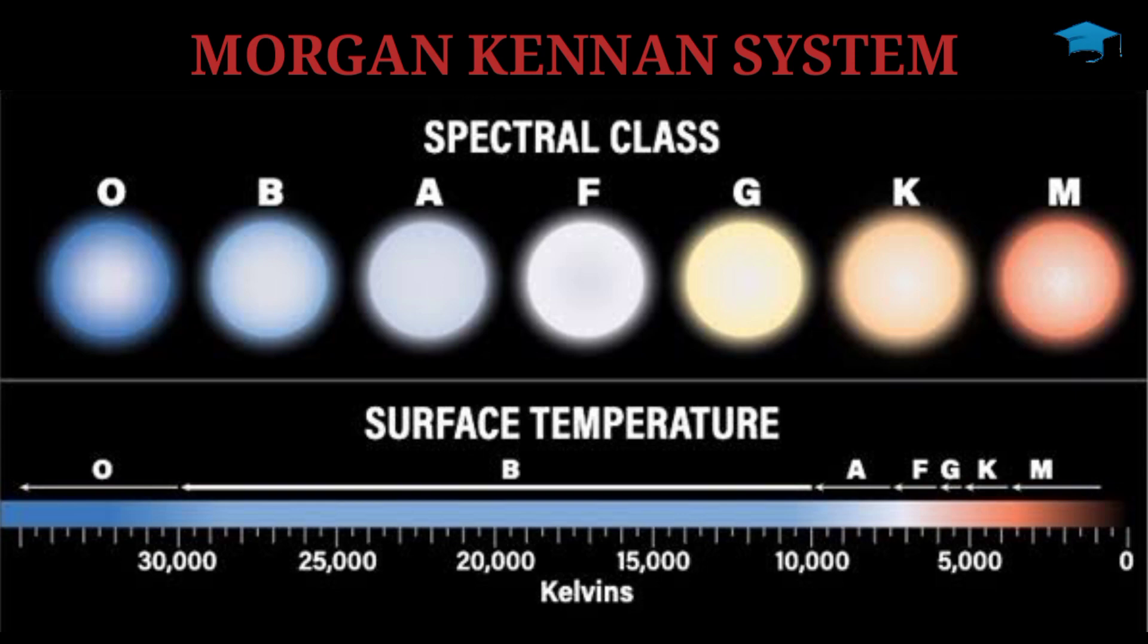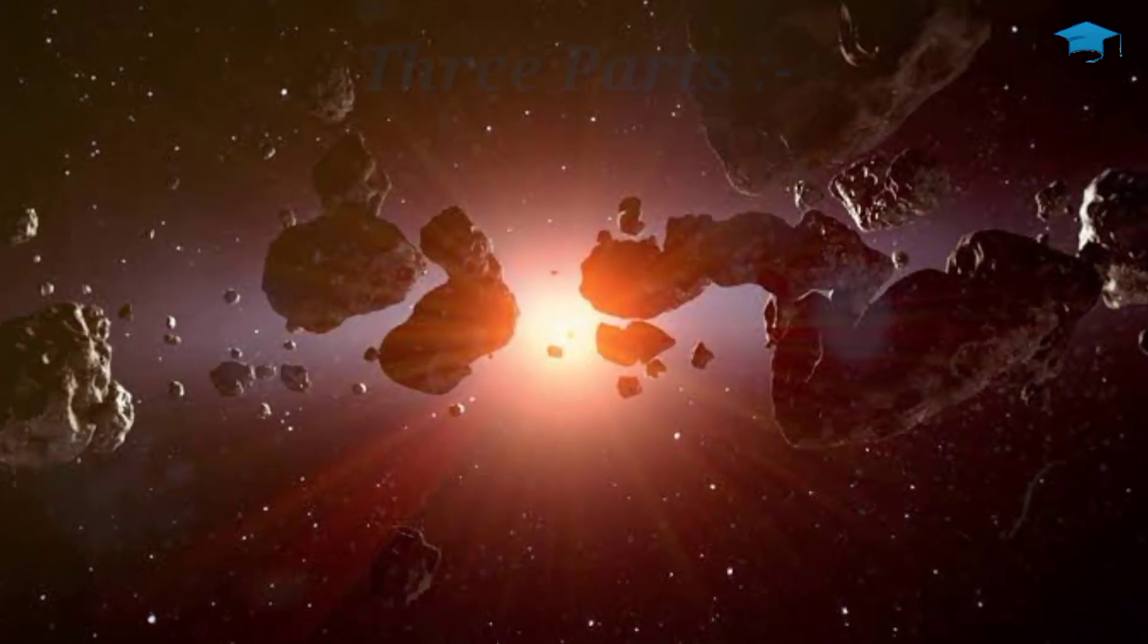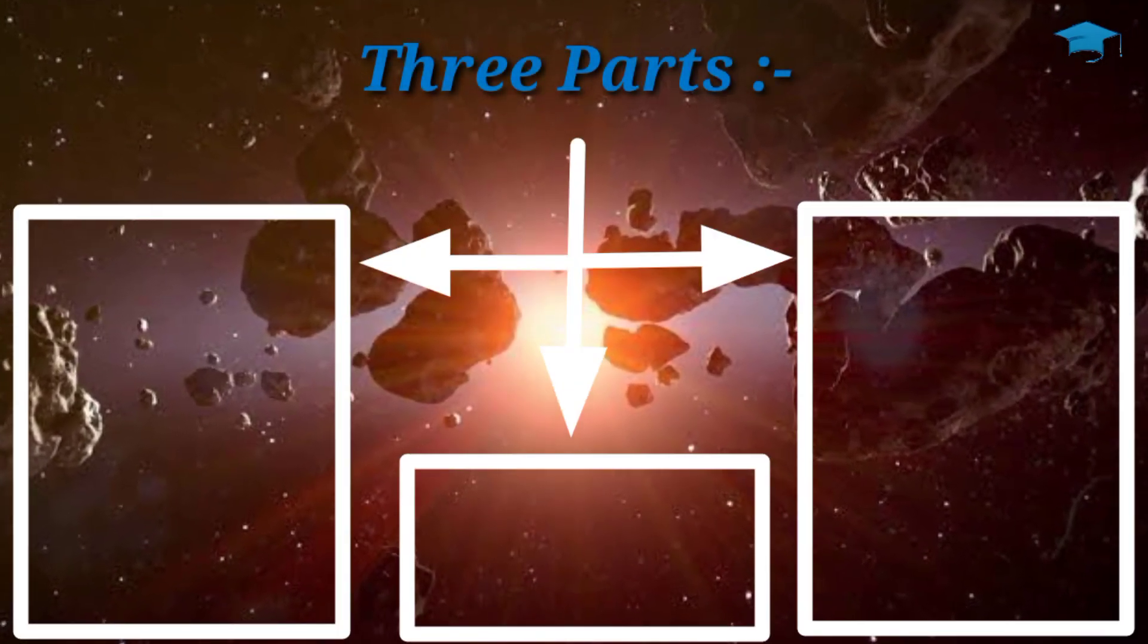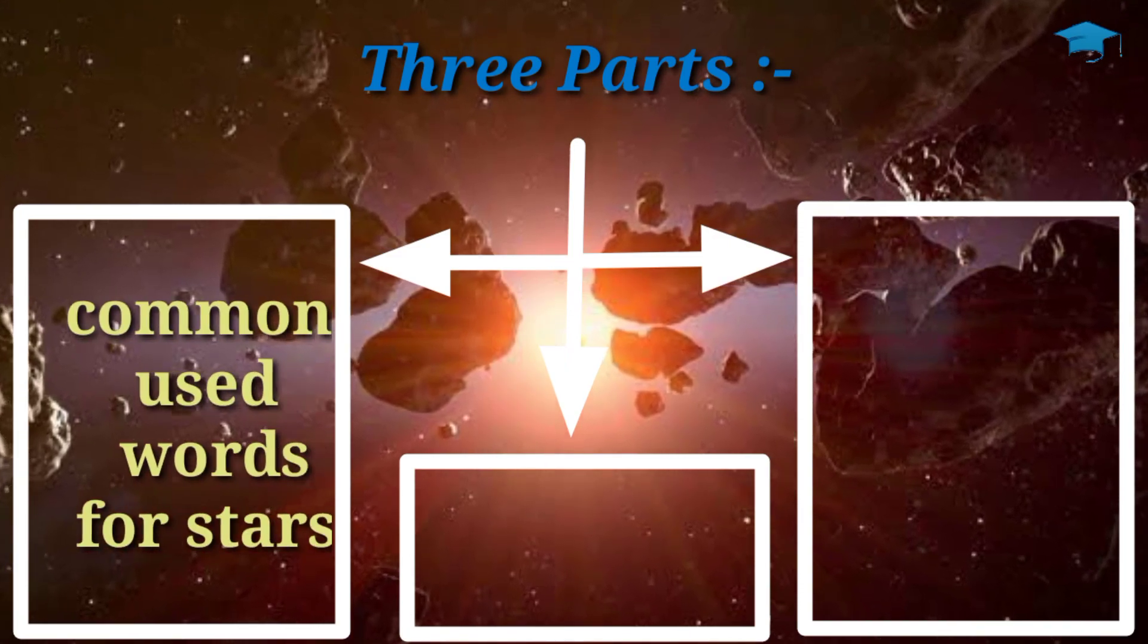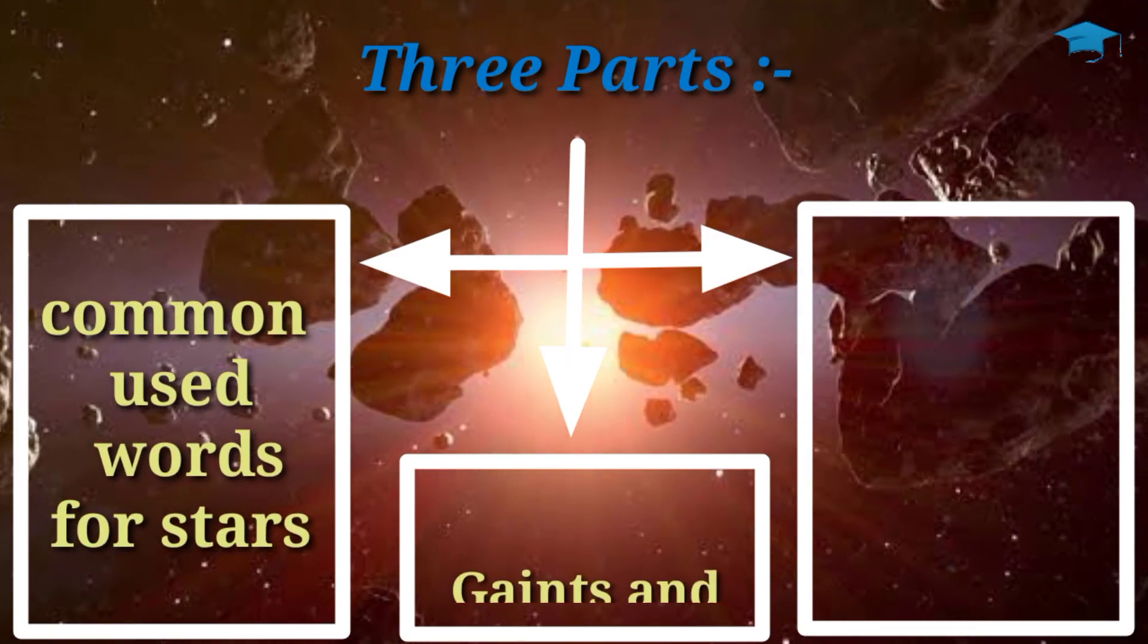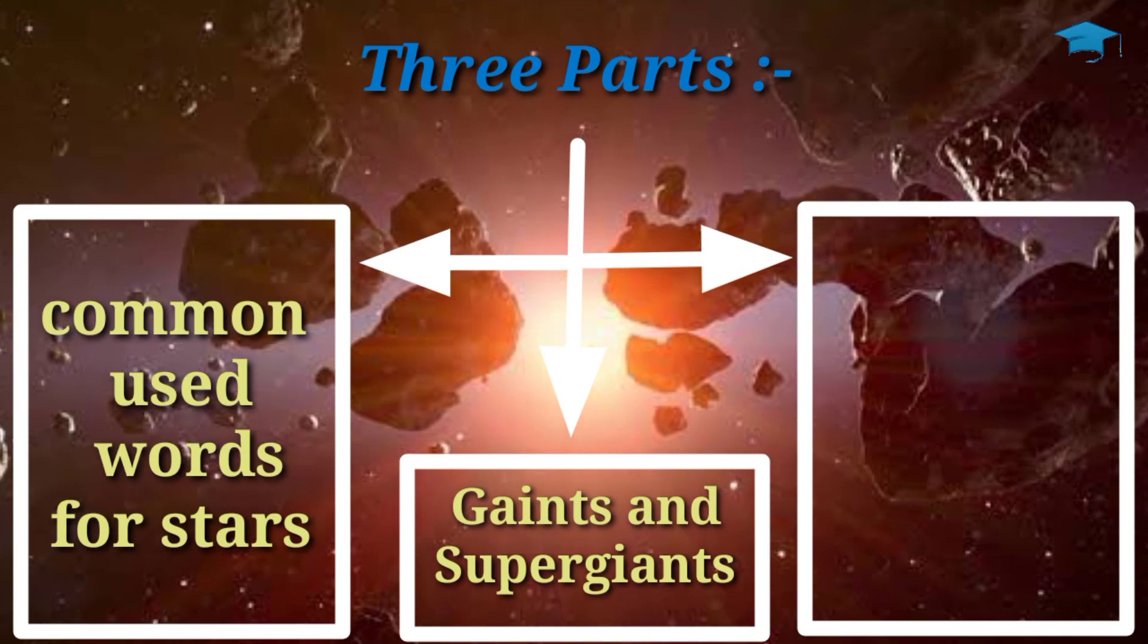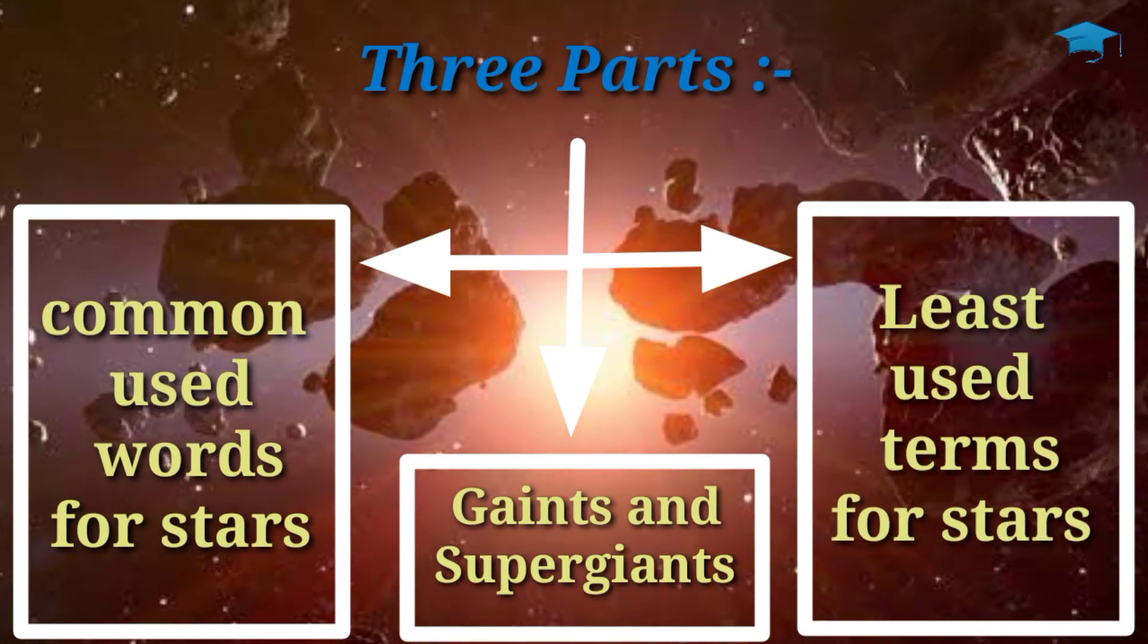This was the classification method used to understand them in an easy way. Now we will see the words and terms used to describe the star and in which position they are placed. We divide the terms into three parts. The first one contains the commonly used word for star. Second one are giants and supergiants. And the third one are the least used terms.